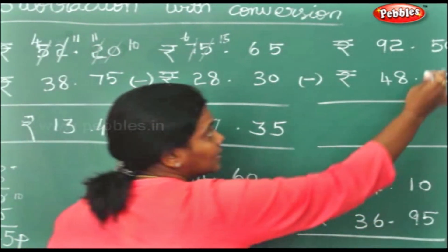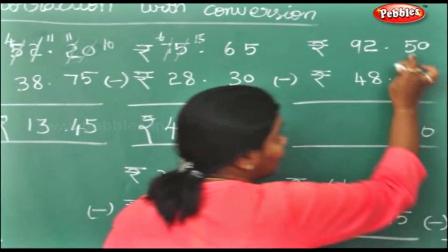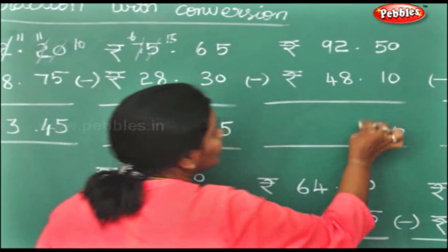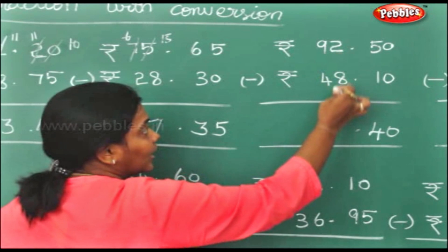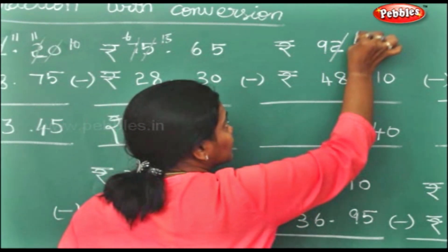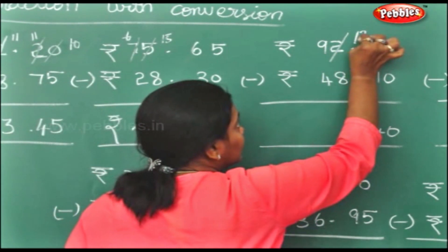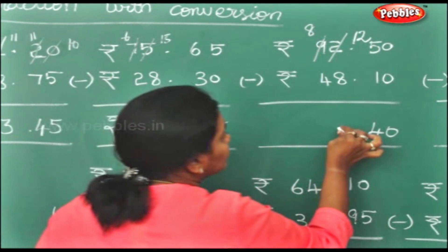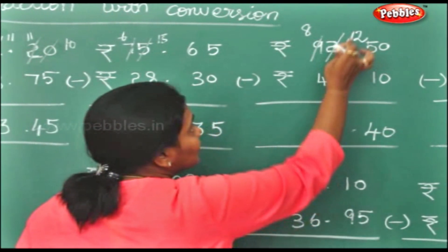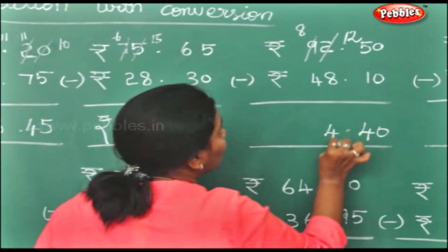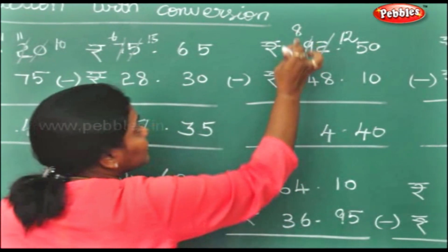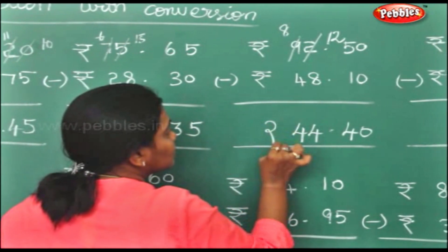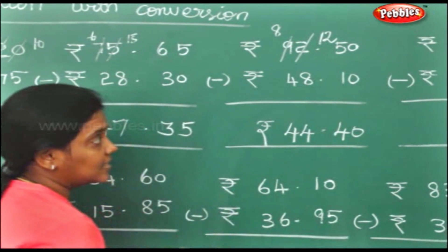Here again, 0 minus 0 is 0, 5 minus 1 is 4. This 2 you cannot take it out, so this becomes 12 and this becomes 8. 12 minus 8 will be 4. 8 minus 4 will be 4 again. So rupees 44 and 40 paise.